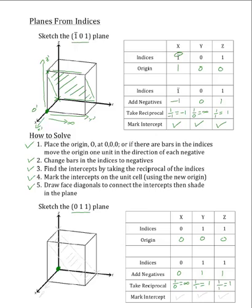Now we mark these intercepts on the unit cell. For our x-intercept, because it is at infinity, we will draw a line in the x-direction to note that the plane extends to infinity. For our y-intercept, we will start at our origin and travel 1 unit in the positive y-direction, which will place our intercept right here. For our z-intercept, we will go back to the origin and travel 1 unit in the positive z-direction, which will place our intercept right here. We will draw the face diagonal connecting the z and y-intercepts, and because the plane extends out in the x-direction, we will extend both points out in the x-direction. The plane will cut through the front face of the unit cell, so we will draw the line where it intercepts it.